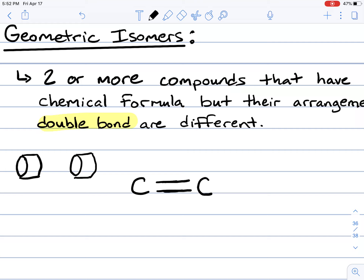Imagine that these two carbons are like marshmallows. You can do this at home as well. Stick two toothpicks — to represent the double bond — inside those two marshmallows. What you want to do next is try to rotate one marshmallow with respect to the other: one goes clockwise, one goes counterclockwise. If you don't have marshmallows and toothpicks, you can imagine moving the tip of your pencil one way versus another.